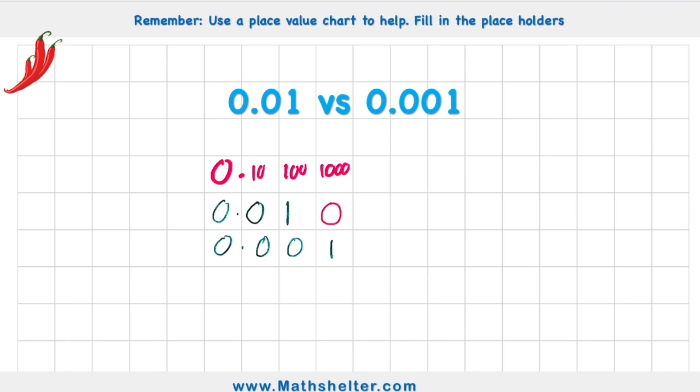Now when I put my placeholder in place, I can see that the top number has ten one thousandths. And the bottom number only has one one thousandth. So which one is bigger? Obviously ten is larger than one.